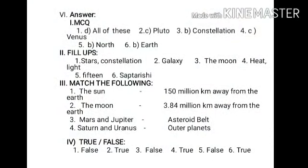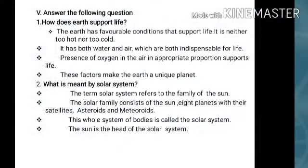Dear students, if you have any doubt, check the answer. Let us discuss — answer the following. Children, take your notebook and copy the question and answer. First question: how does Earth support life? The Earth has favourable conditions that support life. It is neither too hot nor too cold. It has both water and air, which are indispensable for life. Presence of oxygen in the air in appropriate proportions supports life. These factors make the Earth a unique planet.